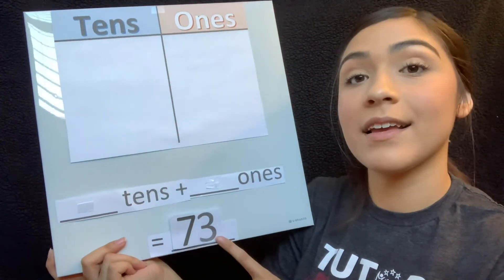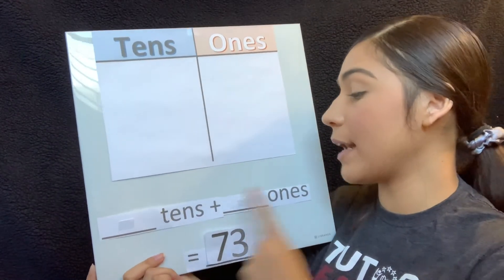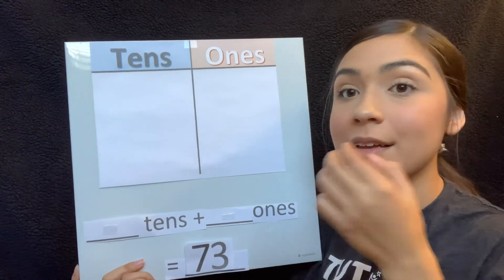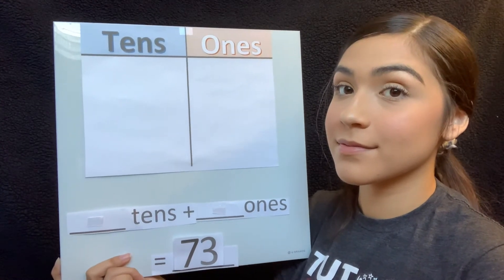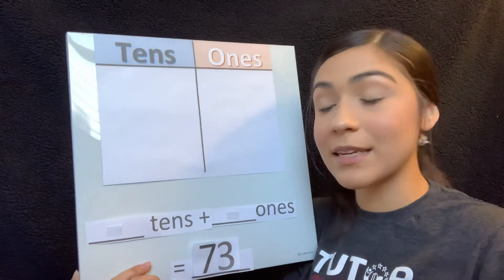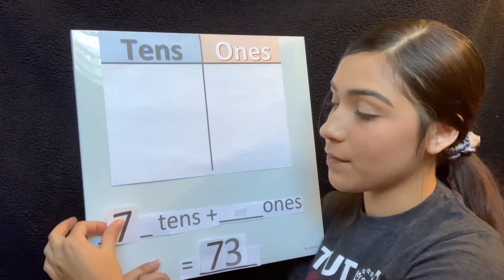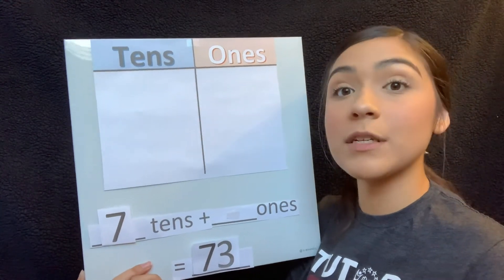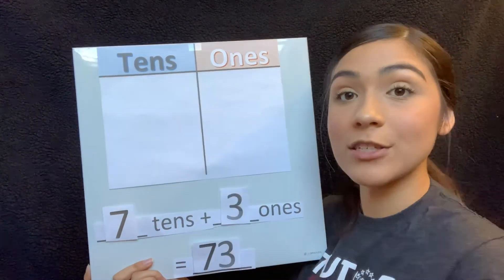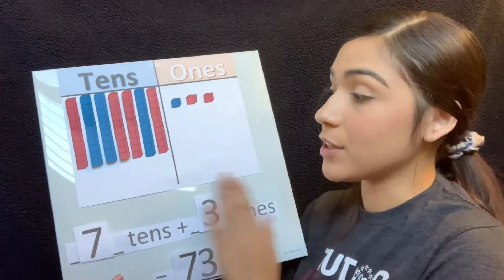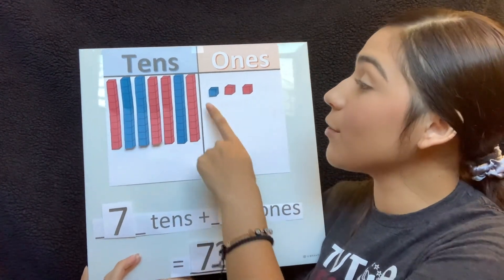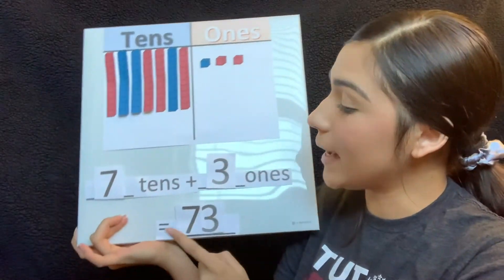Our next number is 73. So tell me, how many tens do we need and how many ones do we need? I want to hear your answers loud and clear. How many tens do we need? Seven. So we're going to need seven tens. How about how many ones? Three. We're going to need three ones. Let's put that in our T-chart. So now let's see how it looks with our ten blocks and our ones. Here are our seven tens and our three ones. So all these together make 73.